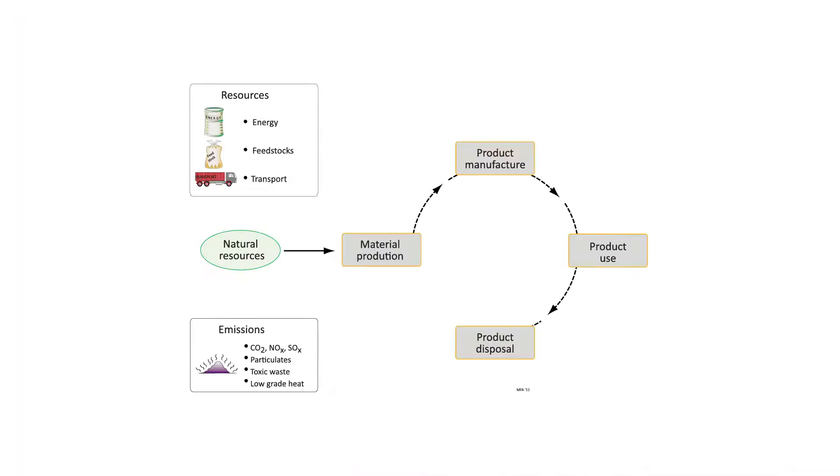But where do these inputs and outputs fit within our lifecycle? During material production, we have the transport of raw materials to the production plant, where we'll use energy and feedstocks to process our starting materials. This will produce emissions and waste. Next, we have to transport our starting material to our product manufacturing site, where once again, we have energy and feedstocks put into the chain, and emissions created.